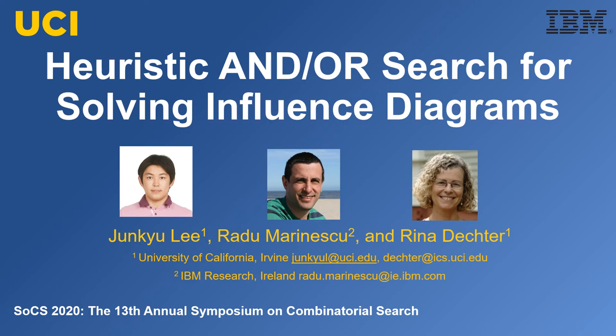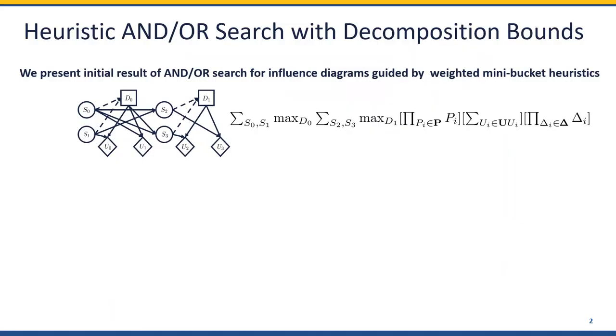Heuristic Annual Search for Solving Inference Diagrams. The main task in inference diagrams is to compute the maximum expected utility and optimal decision policies, and it is considered one of the most challenging tasks in the graphical model.